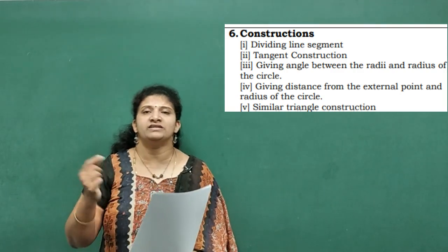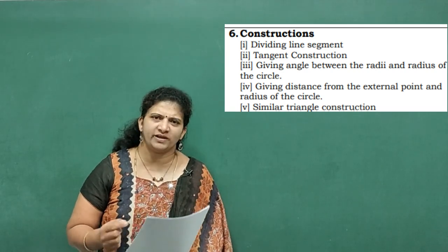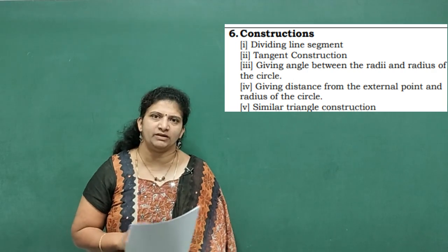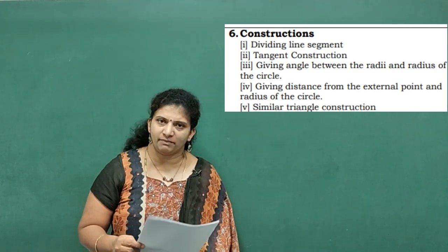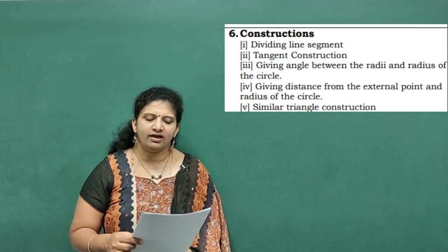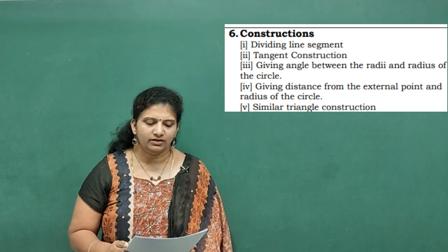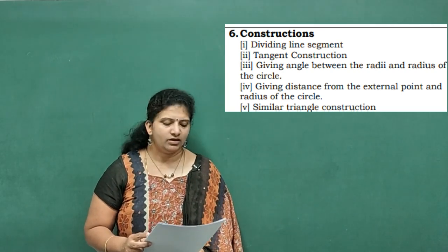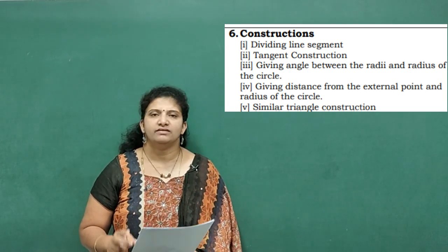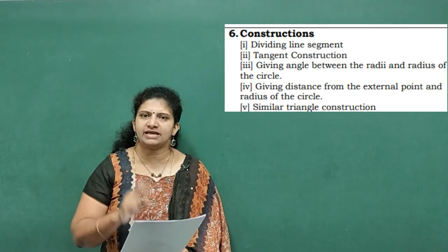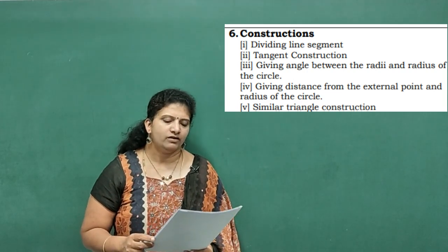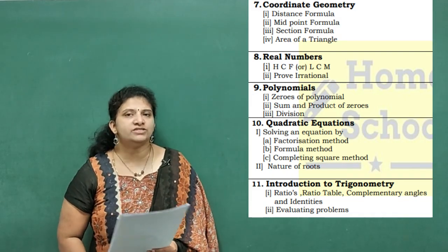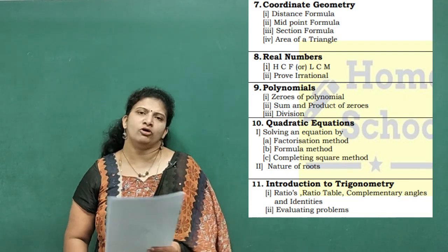The important topics in Constructions are: dividing a line segment, tangent construction, angle between the radii and radius of the circle, distance from the external point and radius of the circle, and similar triangle constructions. Among these, any two concepts are compulsory for seven marks.